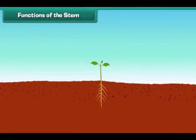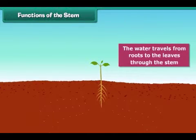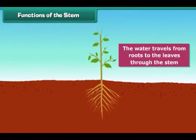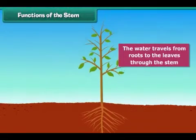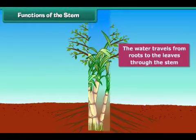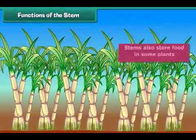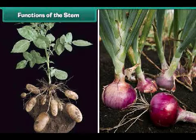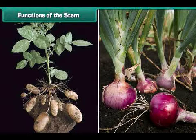The main functions of the stem: the water taken in by the roots travels to the leaves through the stem, where it is used to make food. The stem also carries food made by the leaves to all parts of the plant. Sometimes the food made by the leaves is stored in the stem, as in sugar cane. Other examples are potato and onion — we eat these stems and get nutrition.